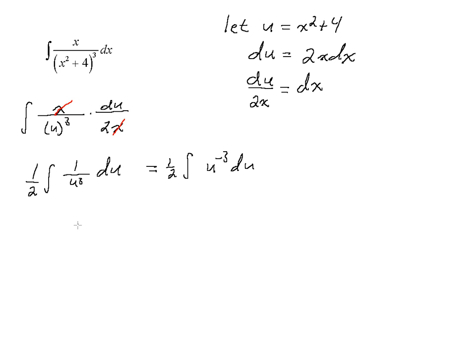And then so we have 1 over 2 is just a constant. u raised to a power of 1, negative 3 plus 1 is negative 2 over the new power is negative 2 plus c. 1 half times negative 1 half is negative 1 over 4.